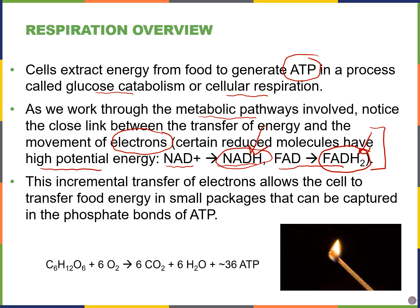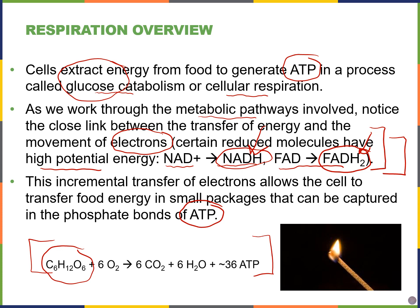The reason we have so many high-energy electron carriers is to avoid releasing energy all at once and losing it as heat when we break carbon-carbon bonds in glucose. We want to be as efficient as possible by creating these small intermediates — these high-energy electron carriers — and capturing energy in ATP as well. The overall equation for cellular respiration shows glucose being broken down, requiring oxygen as input, generating six carbon dioxides, some water, and ATP capturing the energy from those carbon-carbon bonds.